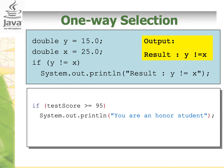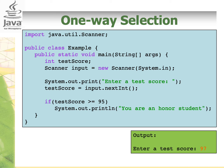Another example: say that you have declared a new Scanner to ask the user to enter their test score. Then you compare the input value whether or not it is larger than or equal to 95. If it is, you will display 'you are an honor student.' If we run this code and enter 97, it will display 'you are an honor student' because 97 is larger than 95, so the condition is true.